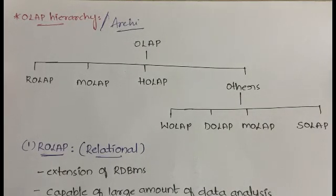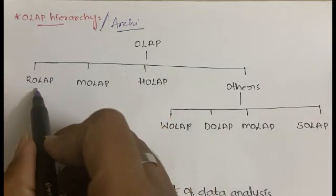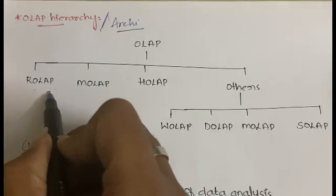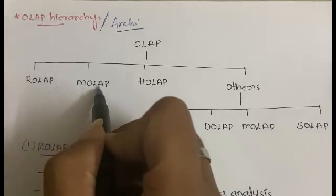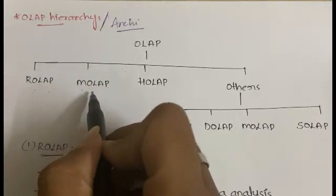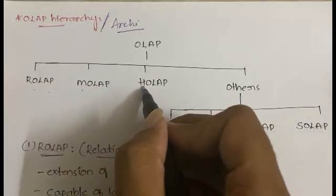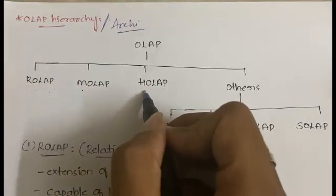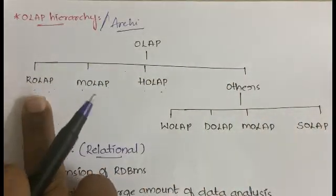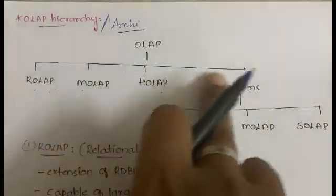OLAP stands for Online Analytical Processing. It is divided into: number one, ROLAP — R means Relational, so Relational OLAP; number two, MOLAP — M means Multi-Dimensional, so Multi-Dimensional OLAP; and next is HOLAP — Hybrid OLAP, which is simply a combination of ROLAP and MOLAP.